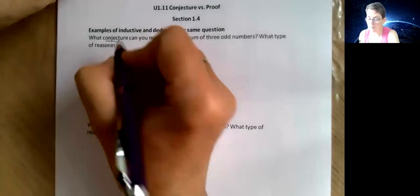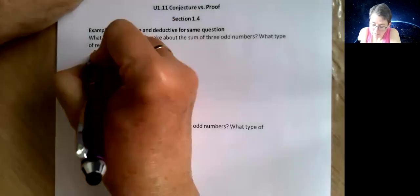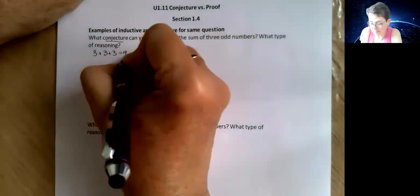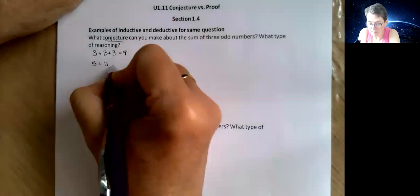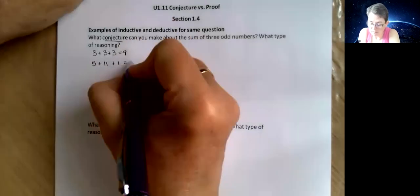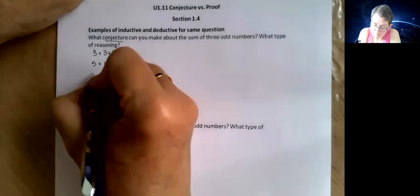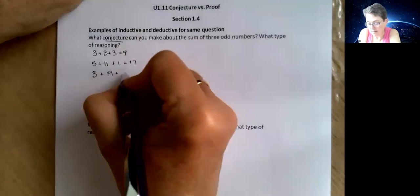So this first one says: what conjecture can you make about the sum of three odd numbers? Okay, so 3 plus 3 plus 3 equals 9. 5 plus 11 plus 1, that's 17. 3 plus 19 plus 21 equals 43.